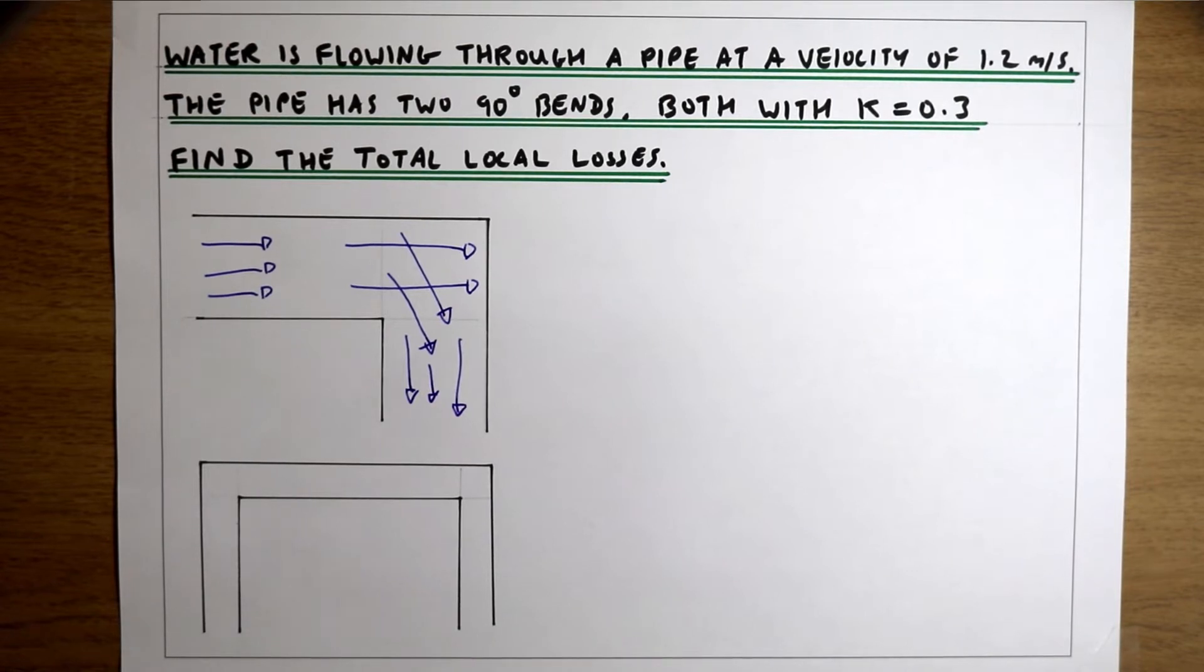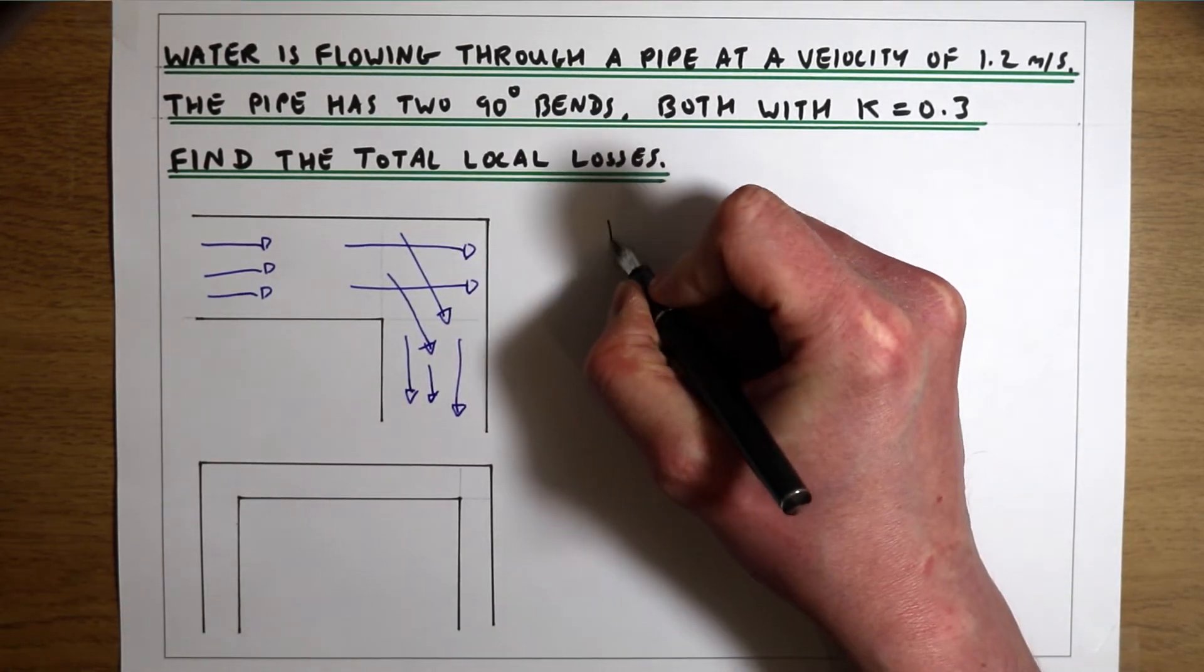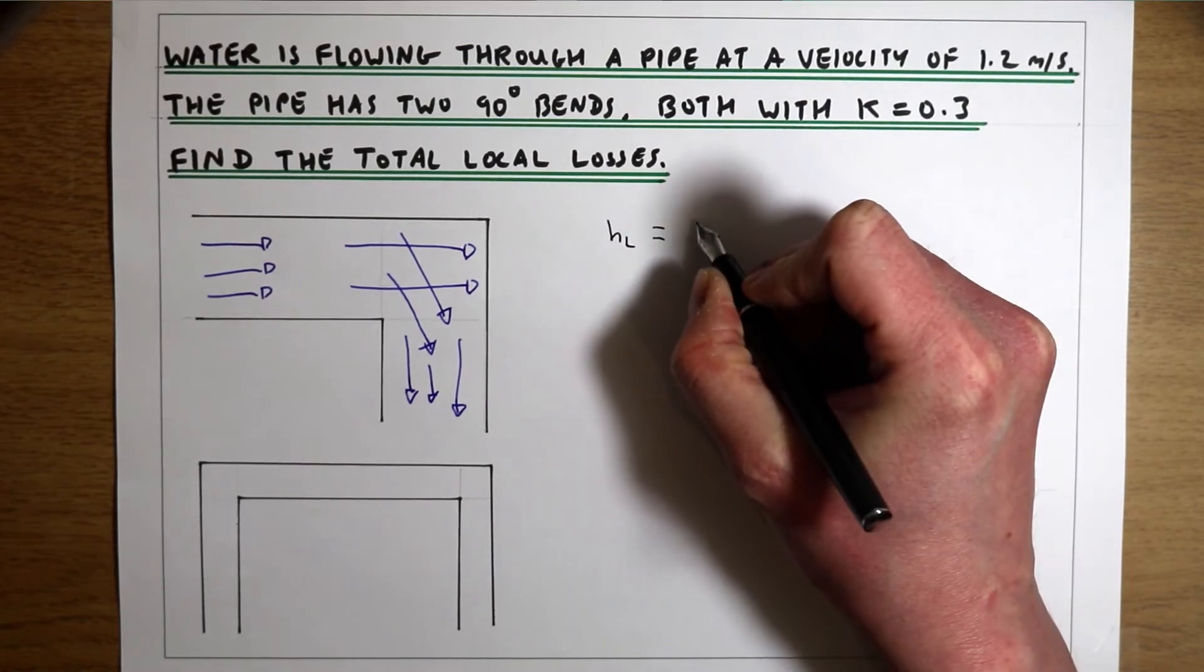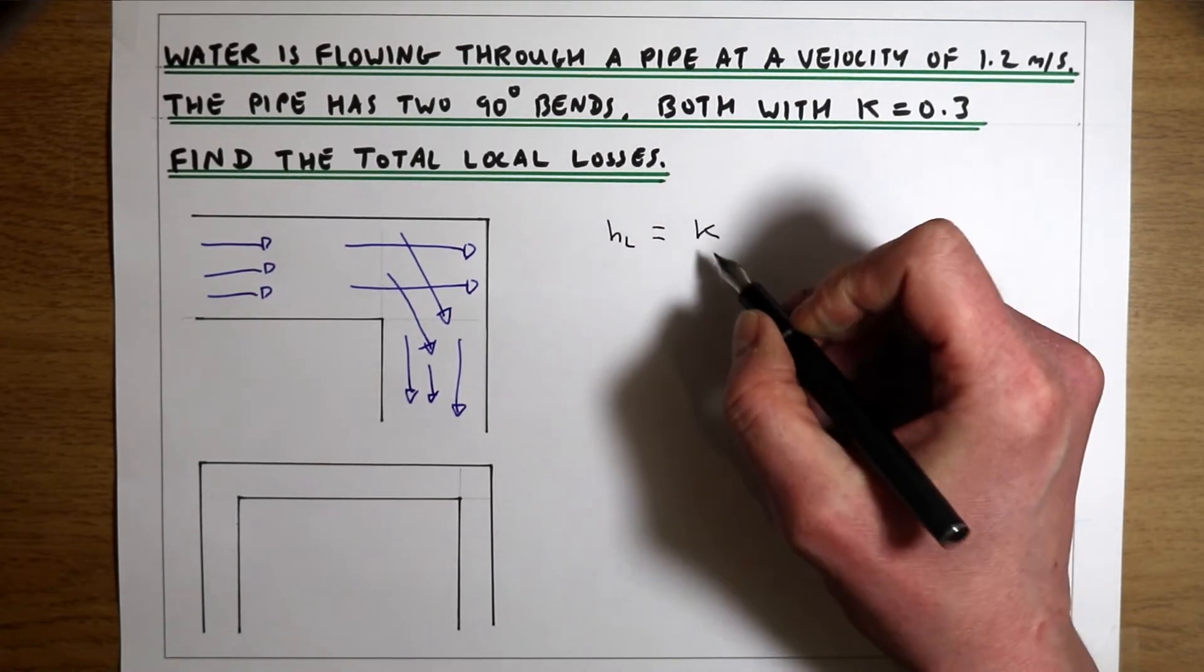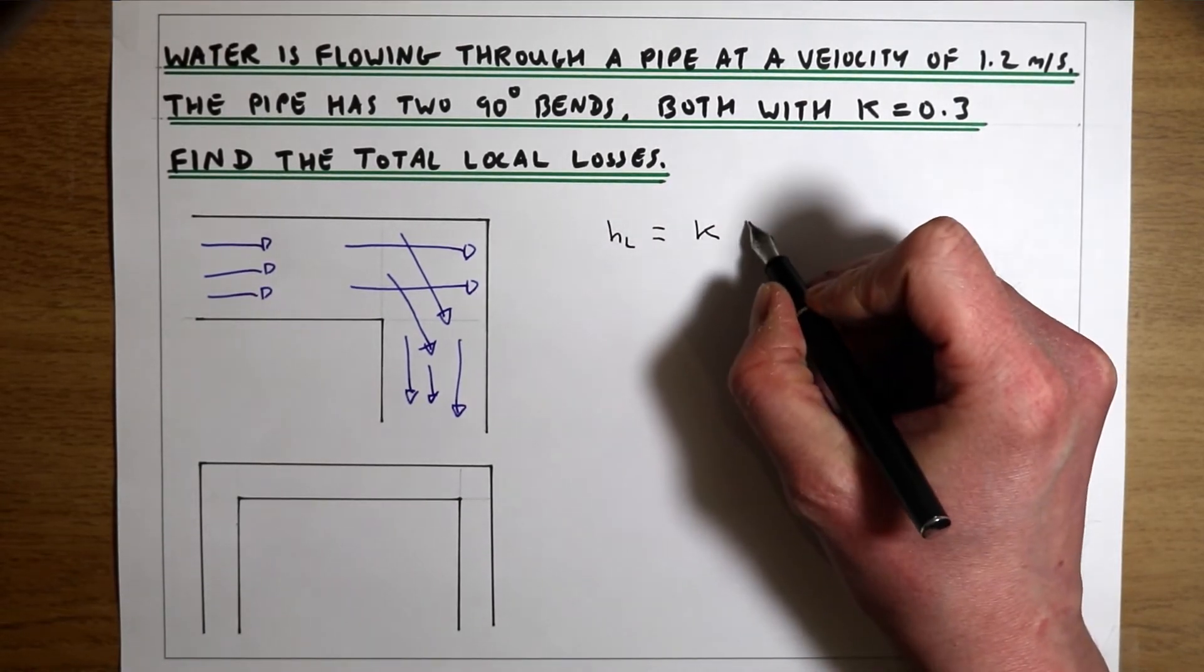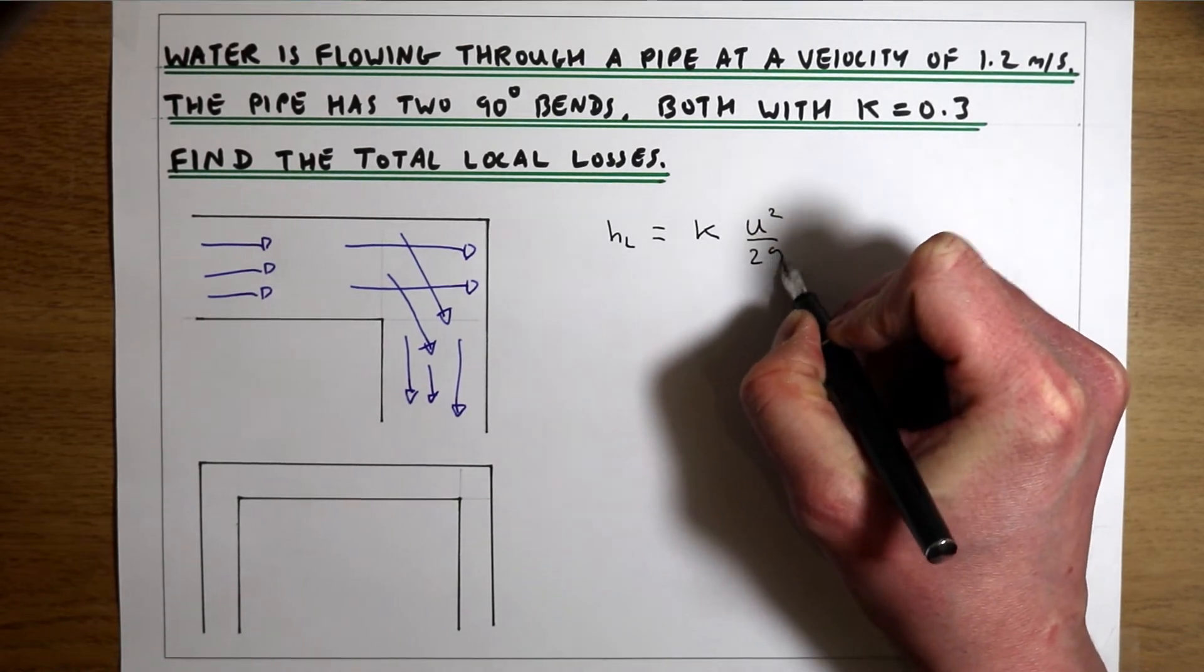And that loss of energy, which is a local loss, is described by a loss coefficient k times by the velocity squared over 2g.